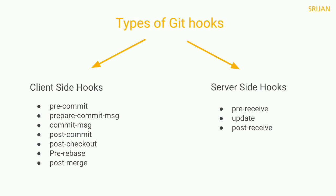Next are server-side hooks: pre-receive, update, and post-receive. Pre-receive lets you enforce dev policies. Update works similarly to pre-receive and is called before anything is updated — it has three parameters: reference, new object, and old object. Post-receive can be used for notifying people via Gmail, Outlook, or Slack — it's up to you.